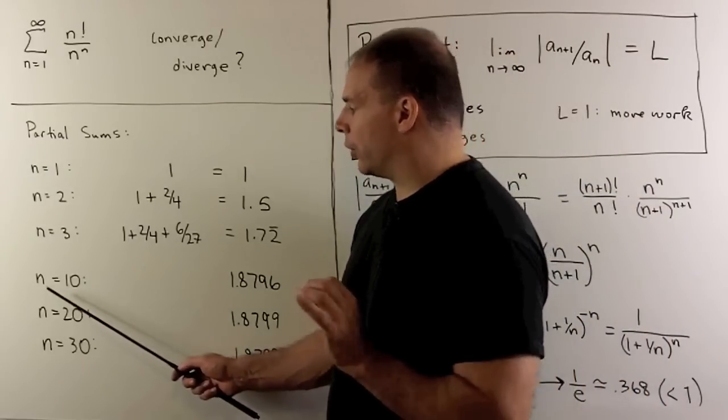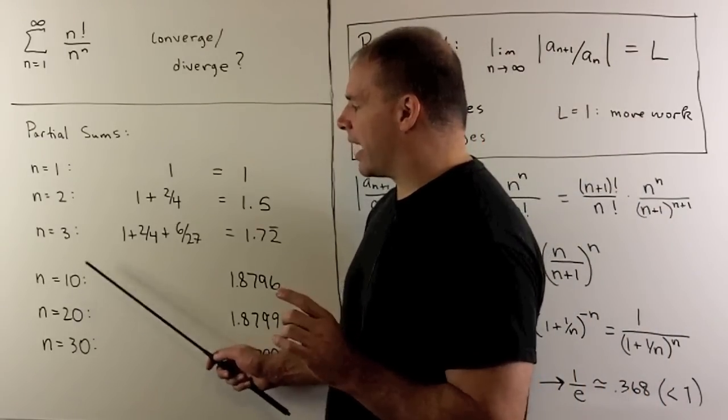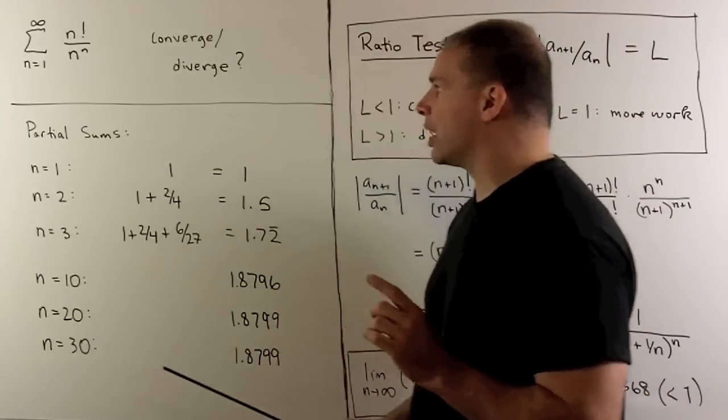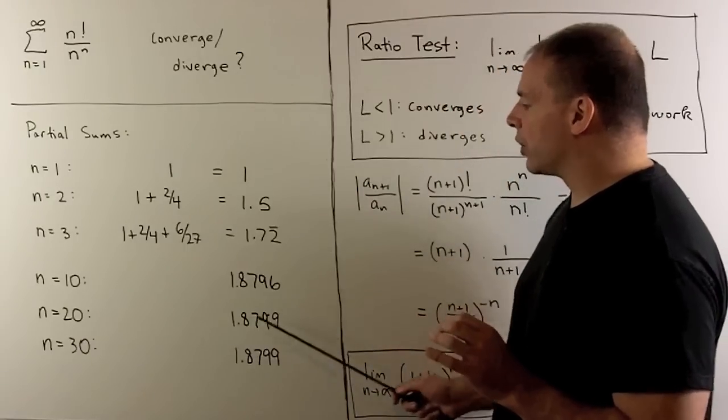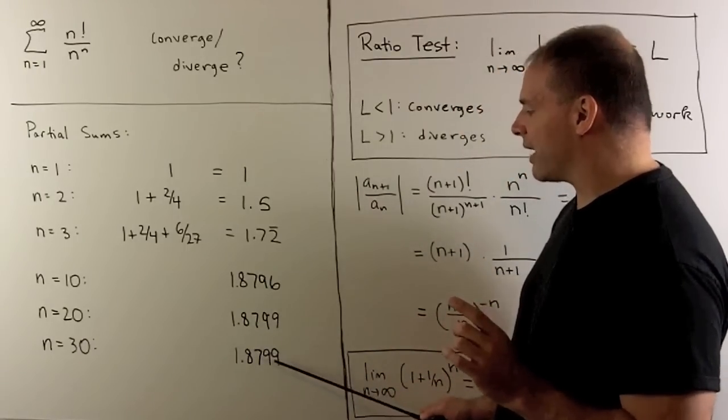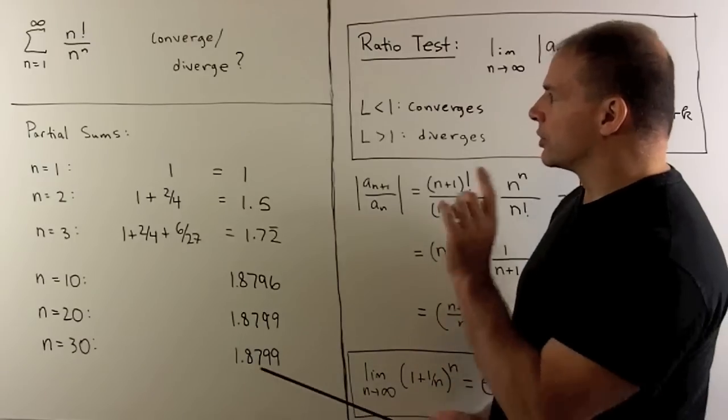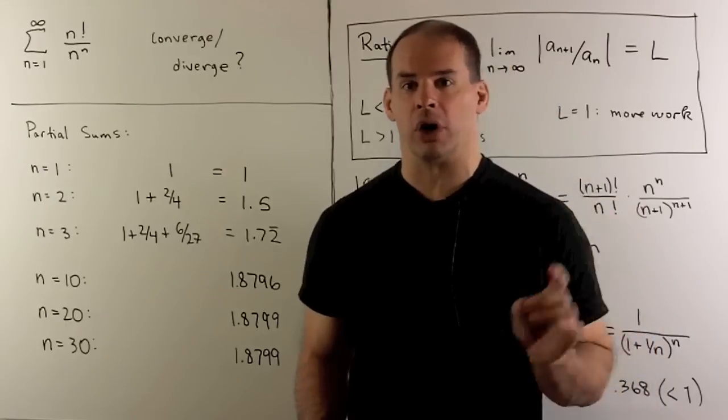Now, if I code a little bit, we could take the 10th, 20th, and 30th partial sums, and we'll see that these are going to level off at 1.8799 if I round. So it's looking like our series is going to converge.